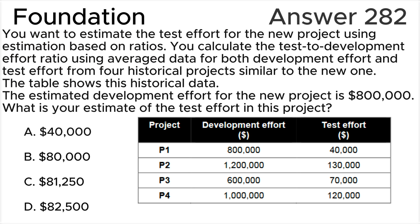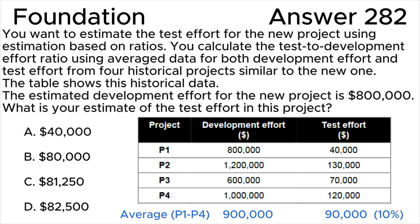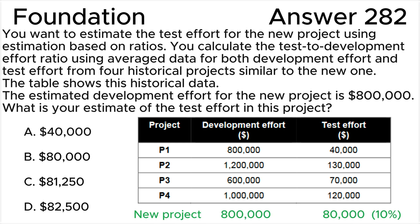To answer this question, you need to figure out estimation based on ratios. The average development effort is nine hundred thousand dollars and the average test effort is ninety thousand dollars, calculated from the four projects. The average test to development effort ratio is one to ten — ninety thousand dollars to nine hundred thousand dollars.